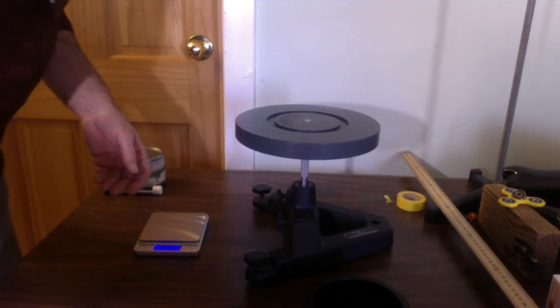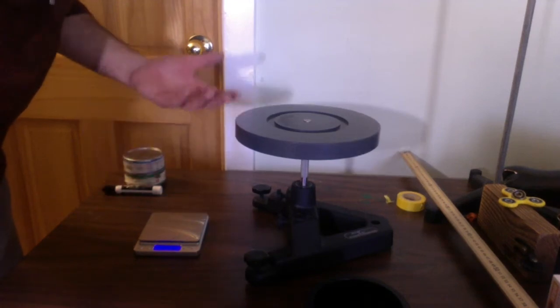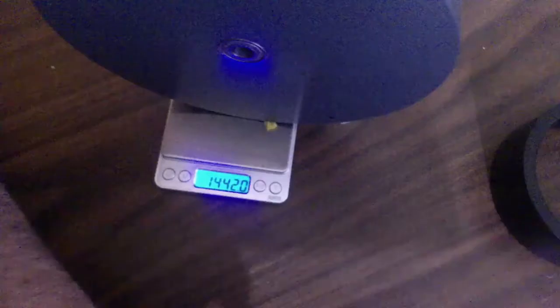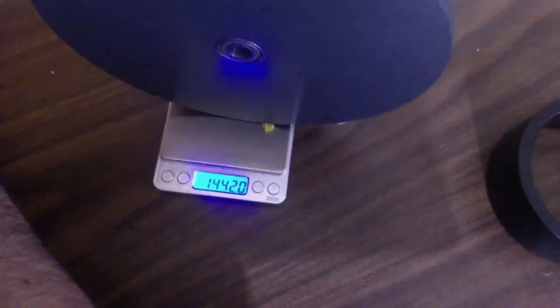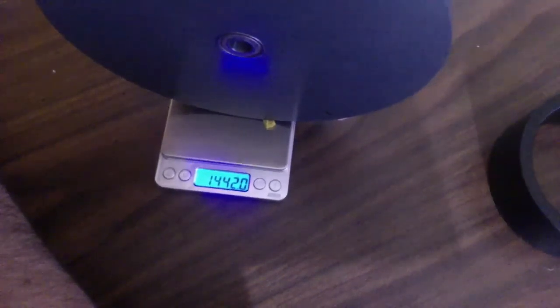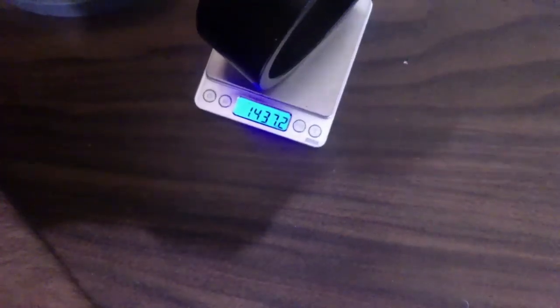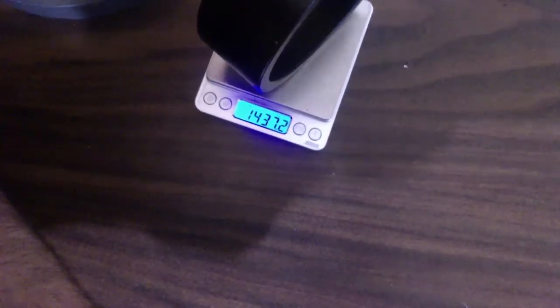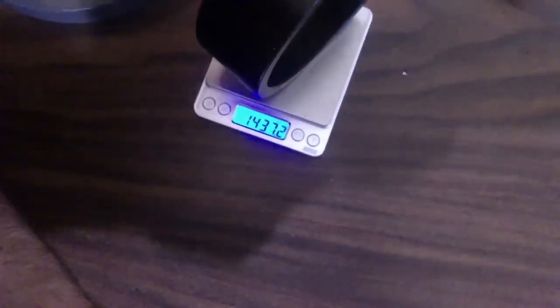Now, you can see that it spins pretty well. So that means there's no external torques. Mass of the disk is 1,442 grams. Mass of the ring is 1,437.2 grams. So they're almost the same mass.